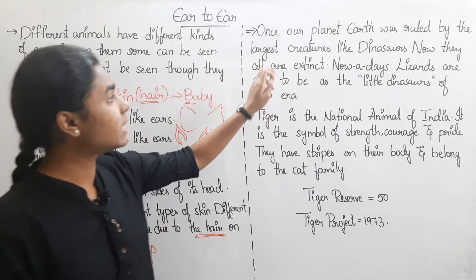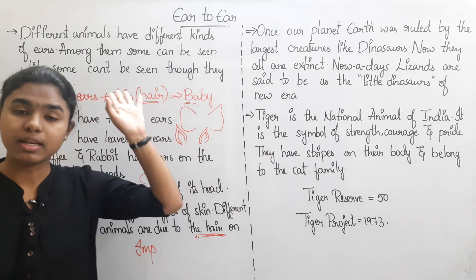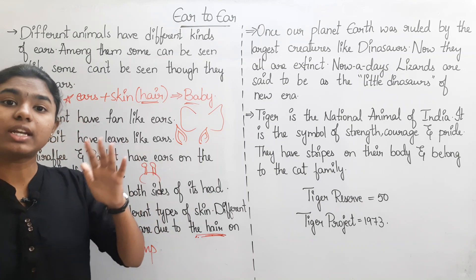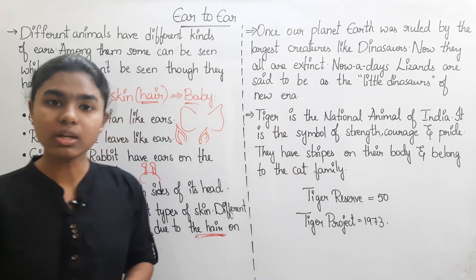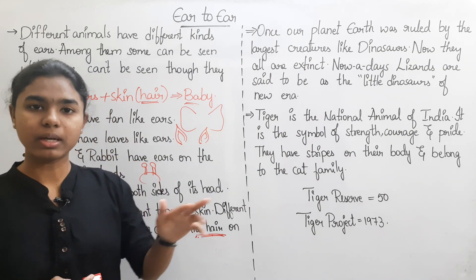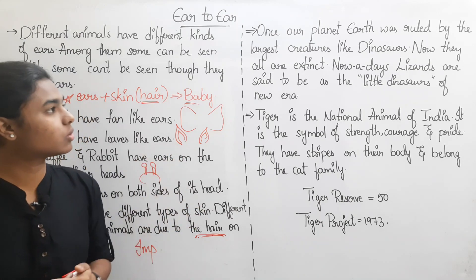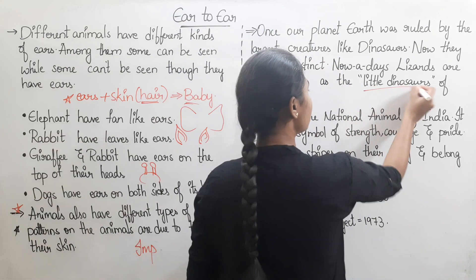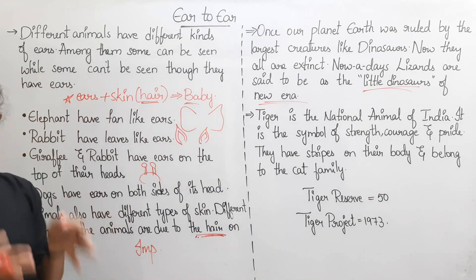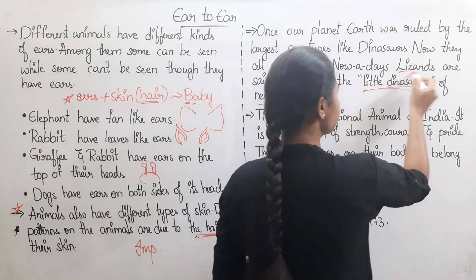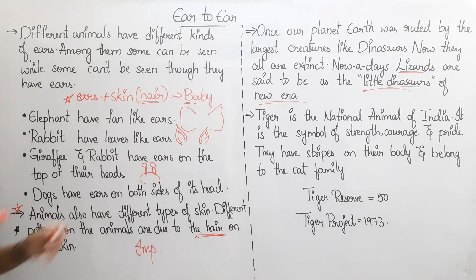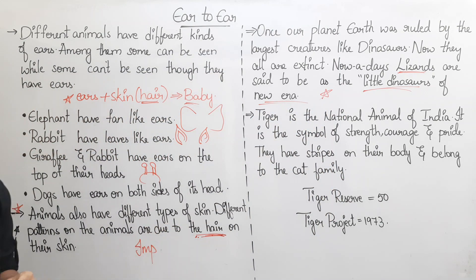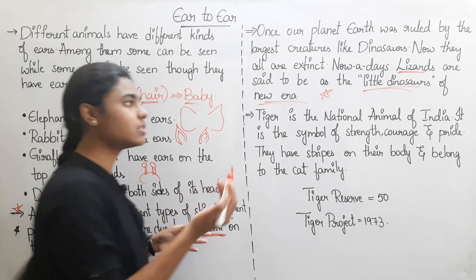Once our planet Earth was ruled by the largest creatures like dinosaurs. These dinosaurs lived some 30 million years back, and they are now classified as the largest reptiles. Reptiles include birds, snakes, and reptiles. Now they are all extinct. Nowadays, lizards are said to be the little dinosaurs of the new era.